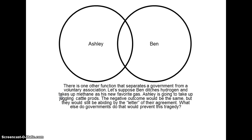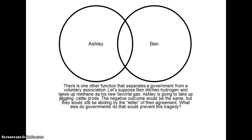There is another function that separates a government from a voluntary association. Suppose Ben ditches hydrogen and takes up methane as his new favorite gas, and Ashley takes up juggling cattle prods. The negative outcome would be the same, but they would still be abiding by the letter of their agreement. What else do governments do that would prevent this tragedy? They interpret the law.